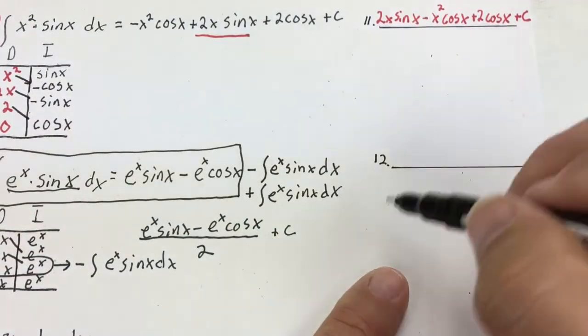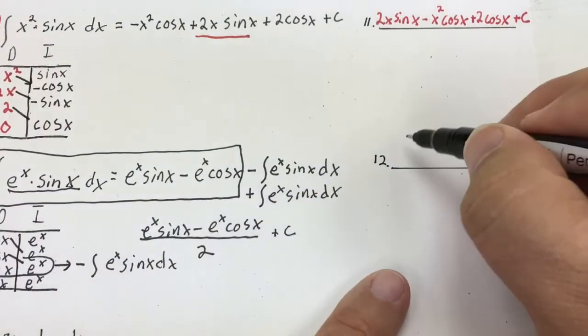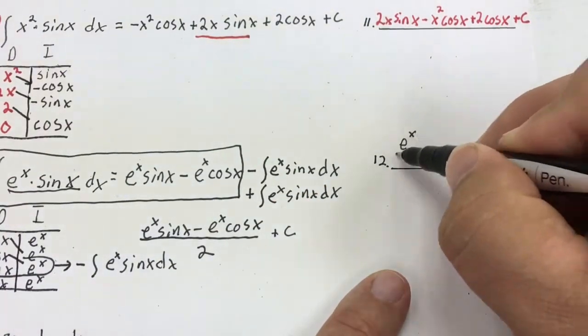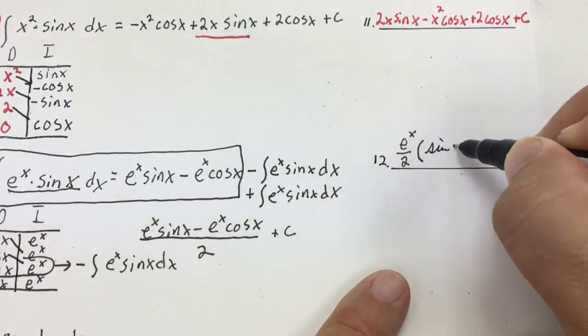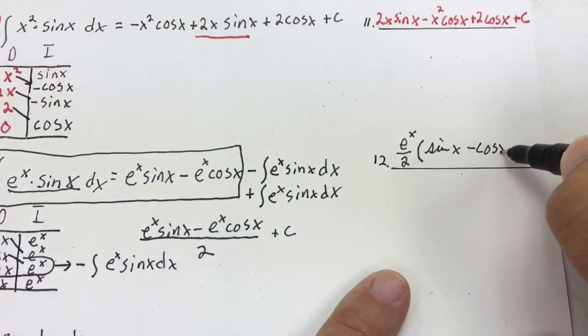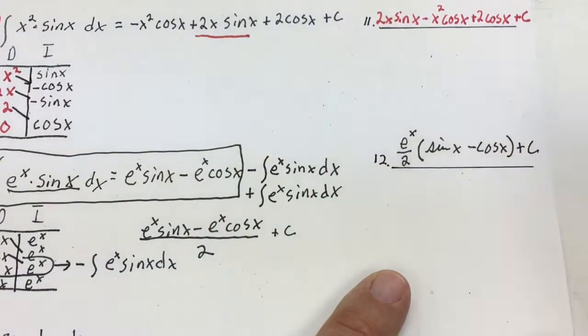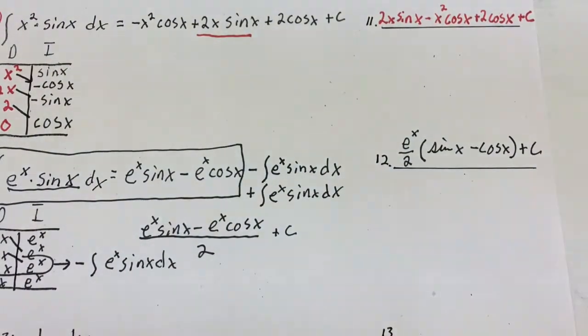That gives me my final answer: eˣ sine x minus eˣ cosine x, all over two, plus C. The answer might be written in several different formats — notice I can pull an eˣ out, so it might be eˣ over two times (sine x minus cosine x) plus C. Any version of this will be acceptable.